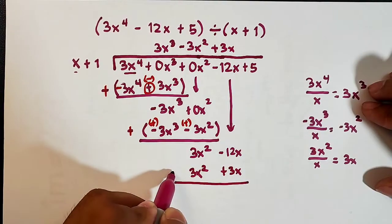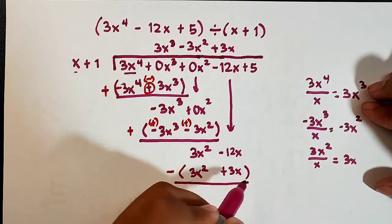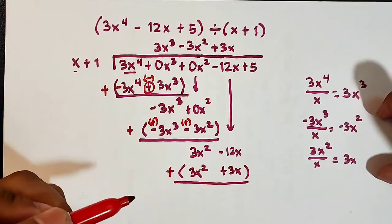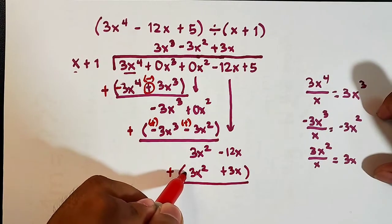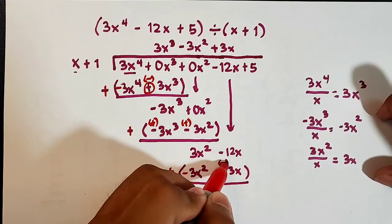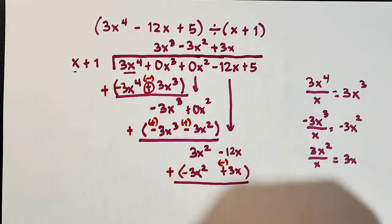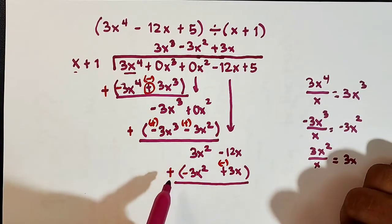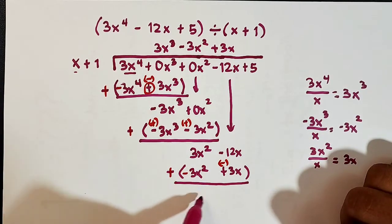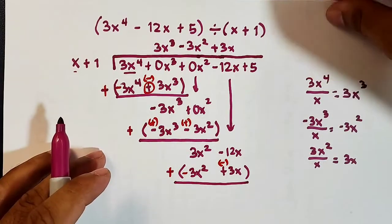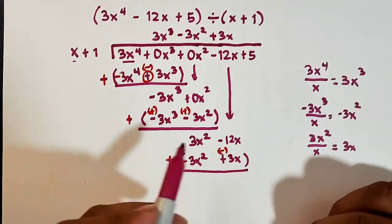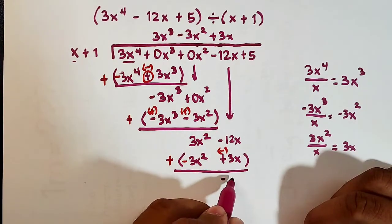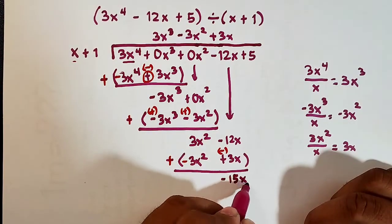Subtract and enclose in parentheses. We change the signs to addition: positive becomes negative. So 3x squared plus negative 3x squared is zero. Then negative 12x plus negative 3x is negative 15x. Bring down your plus 5.